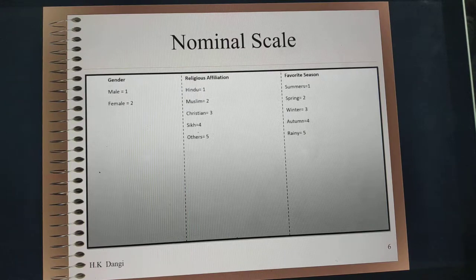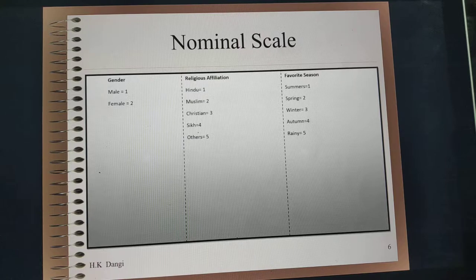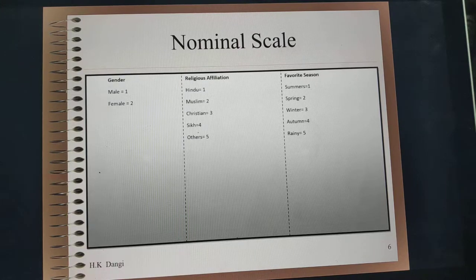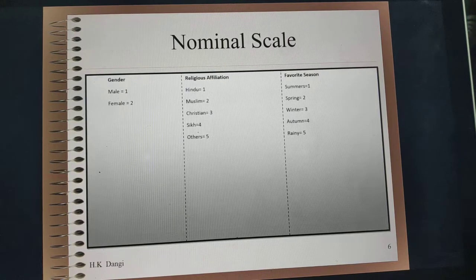Similarly, if you divide seasons based on preference — for example, summer 1, spring 2, winter 3, autumn 4, rain 5 — then it would be nominal data.